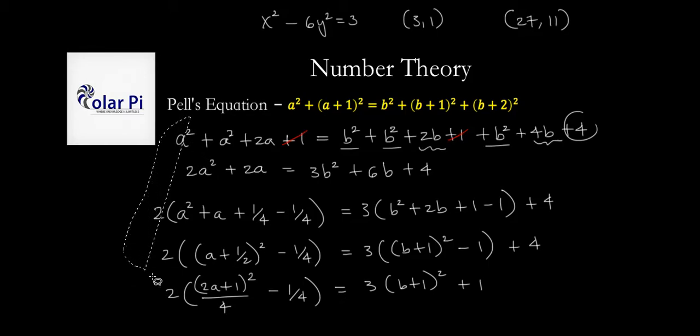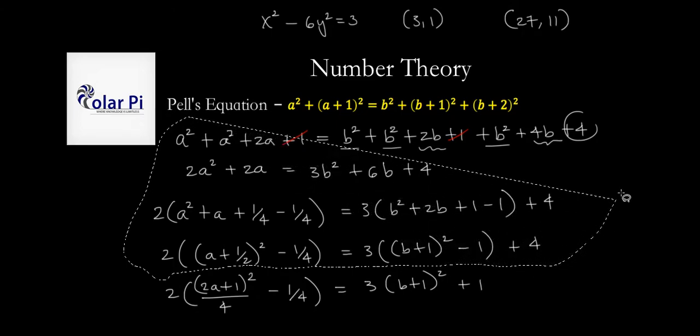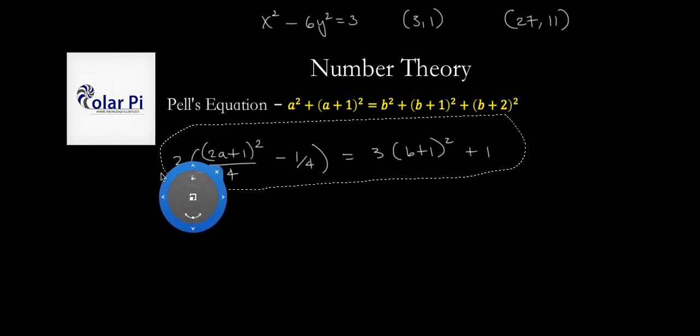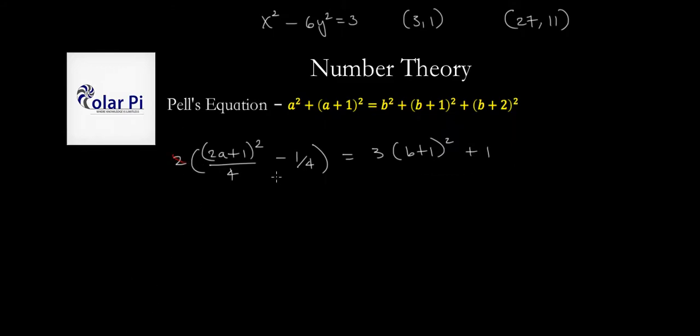Now next, we're going to distribute the 2, distribute it to the first and the second guy. And then once I do that, I've got on the left side (2a + 1)² - 1, all divided by 2, equals, on the right side, it will be 3 times (b + 1)² + 1.